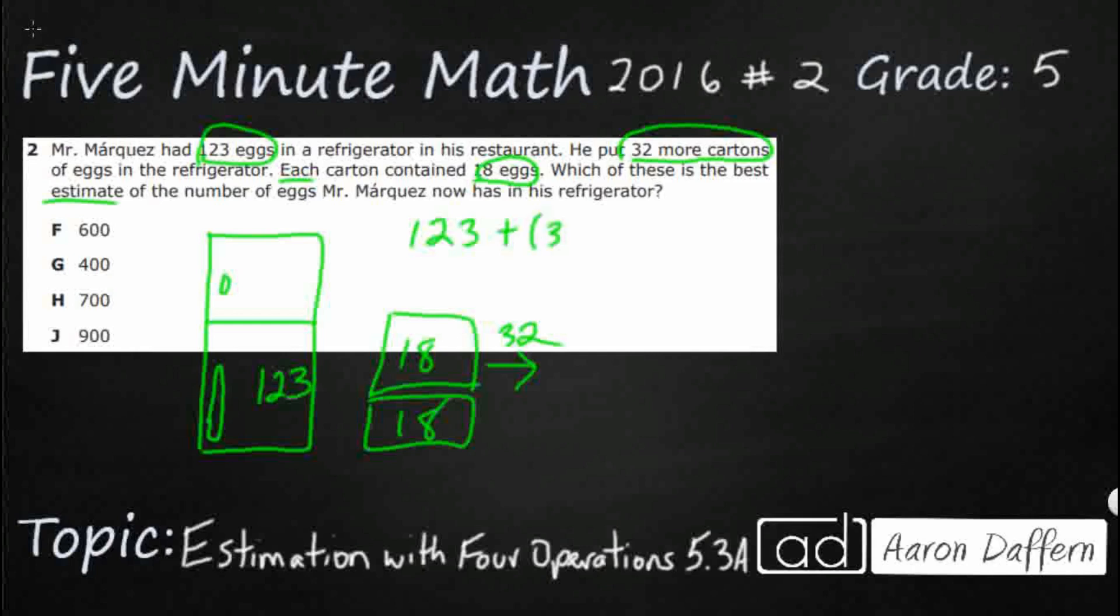So, what I'm looking for is 123 eggs plus my new cartons of eggs. So, I'm going to say 32 times 18. We don't really need the parentheses using order of operations, but it just looks a little bit better. Equals, and this is going to be eggs.